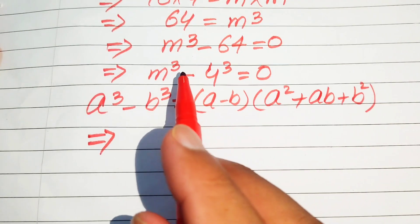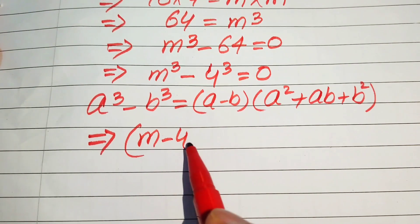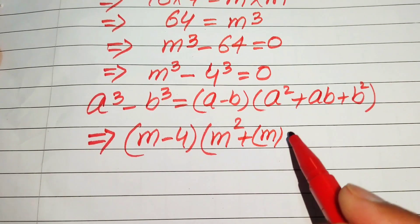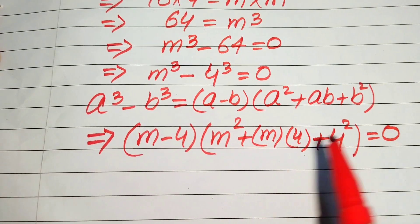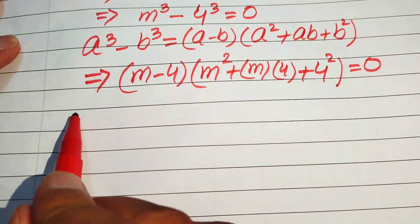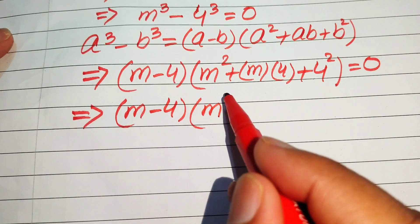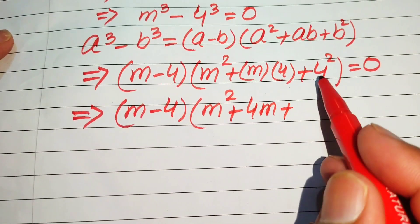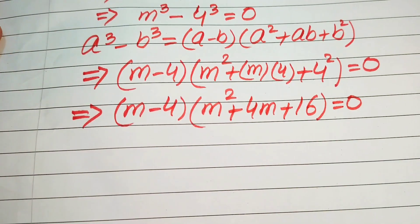After applying this formula, the equation is written as (m minus 4) times (m squared plus m times 4 plus 4 squared) equals 0. Simplifying, that is (m minus 4) times (m squared plus 4m plus 16) equals 0.